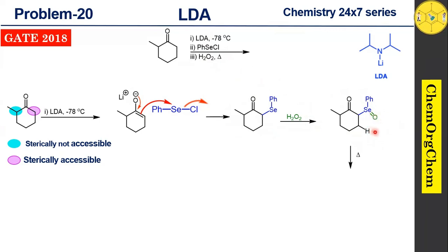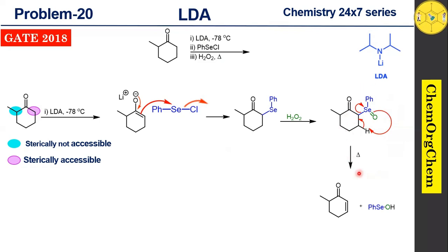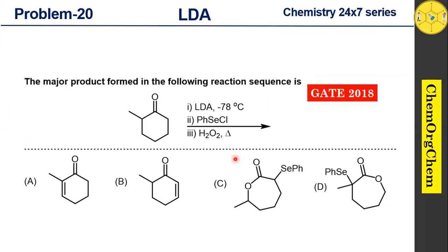In the selenoxide elimination, the pi electrons abstract the proton, followed by electron shifts toward the selenium atom, producing the corresponding alkene along with a selenium byproduct. This step proceeds by a concerted mechanism and is the most important step. Based on this discussion, option B is the correct answer.